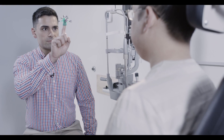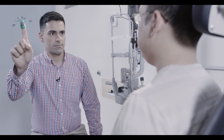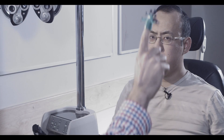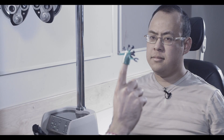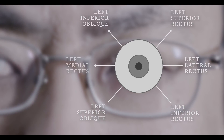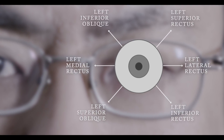Move your finger in an H shape to the nine cardinal positions of gaze. As we do this test, we should note the speed, smoothness of pursuit, and symmetry of eye movements. This diagram shows us which muscle is tested in each direction of gaze.